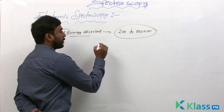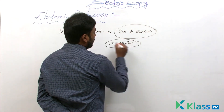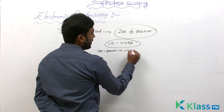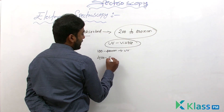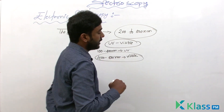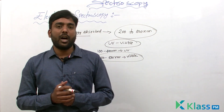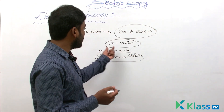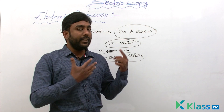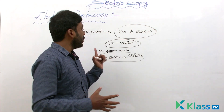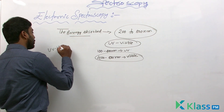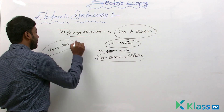This range belongs to the UV and visible spectrum. UV comes under 100 to 400 nanometers and visible comes from 400 to 800 nanometers. Even though UV spans 100 to 400 nm, for all normal practices we consider 200 to 800 nanometers. This spectroscopy is therefore also called UV-visible spectroscopy.